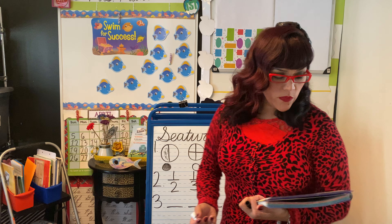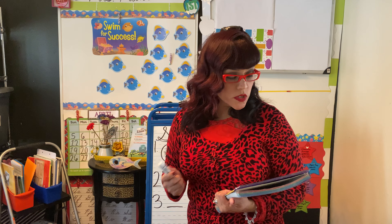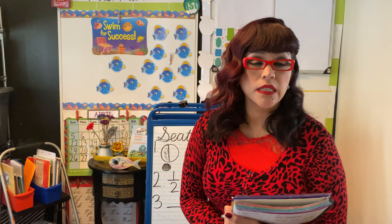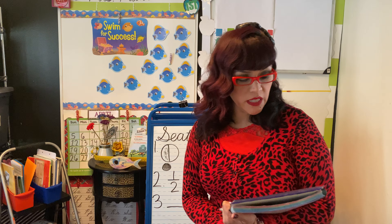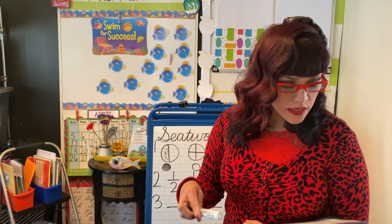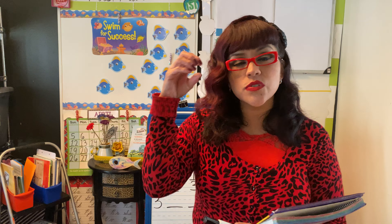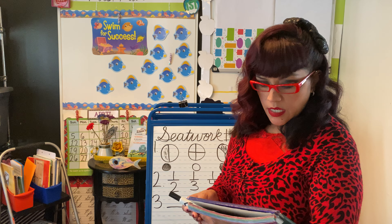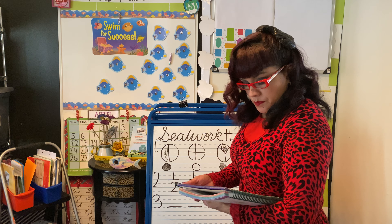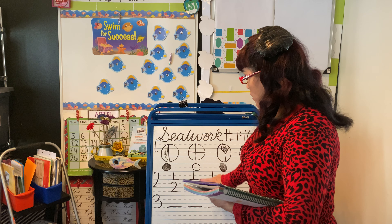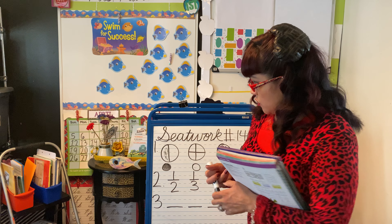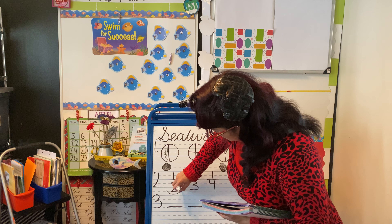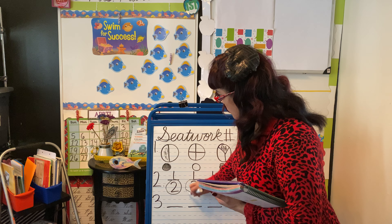All right, now for number two, the directions say circle the number that shows the total parts in the fraction. That is very, very easy. The only thing that you have to do is literally just circle the bottom number, because circle the number that shows the total parts in the fraction, okay? So we have one-half, we have one-third, and one-fourth. So this is what you should do — circle the bottom number for all of those, okay?